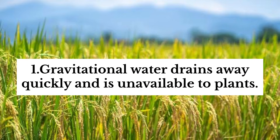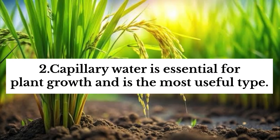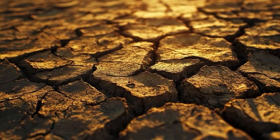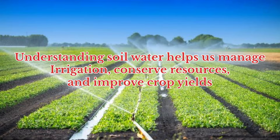To recap: gravitational water drains away quickly and is unavailable to plants; capillary water is essential for plant growth and is the most useful type; and hygroscopic water is bound tightly to soil particles and cannot be absorbed by plants. Understanding soil water helps us manage irrigation, conserve resources, and improve crop yields.